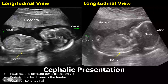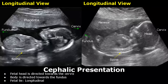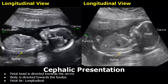Fetal presentation can be seen in a longitudinal view. The cephalic presentation is the most common and an ideal presentation for normal delivery. The fetal head is directed towards the cervix and will be seen on the right side of the image. The fetal body is directed towards the fundus, that is the upper part of the uterus, and is seen on the left side of the image in a longitudinal view.